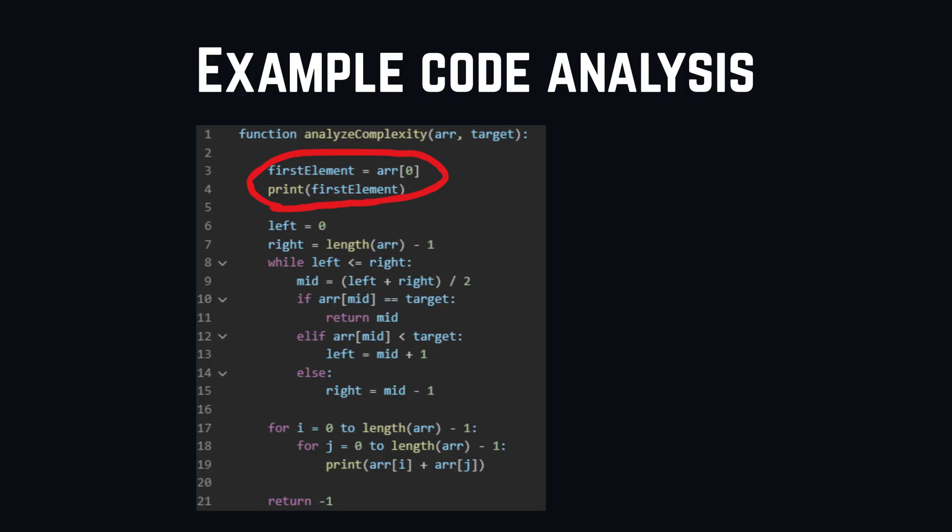Alright, then let's look at line 3 and 4, where we have an array axis and a print statement. Both of these statements happen in constant time. So, we have O of 1 for both.